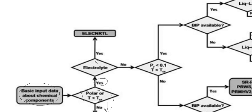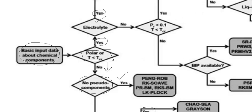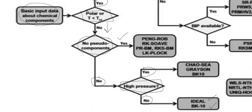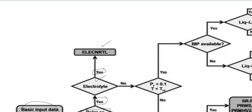Now, if it is a polar system — meaning 'Yes,' we are dealing with a polar system — the first thing we check is whether it is an electrolyte system or not. If it is an electrolyte system, we simply select Elec-NRTL. NRTL stands for Non-Random Two Liquids, and Elec-NRTL is its electrolytic extension.